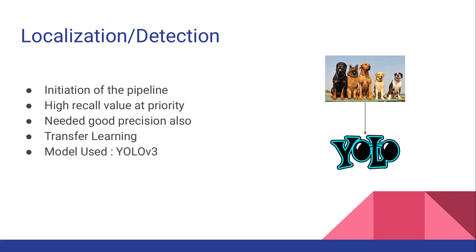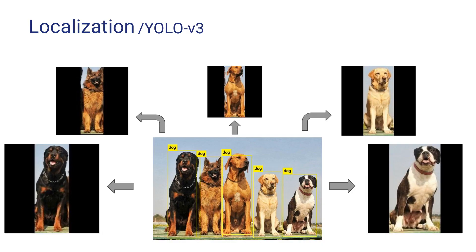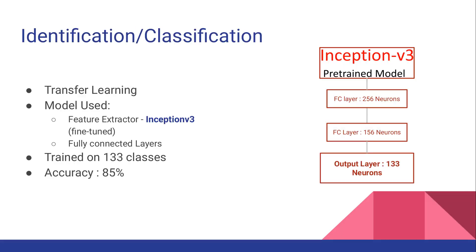To solve this we used transfer learning with YOLO v3, a very good detection model with both high speed and accuracy. We didn't train it from scratch — we used the pre-trained model directly and it works fine, detecting every dog. The detector crops out each dog image and sends all of them to the classifier.